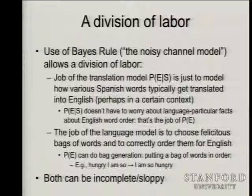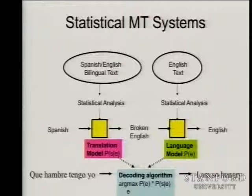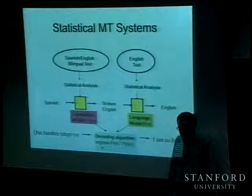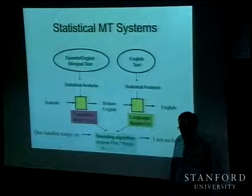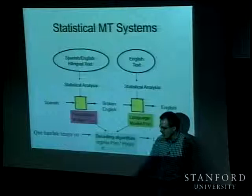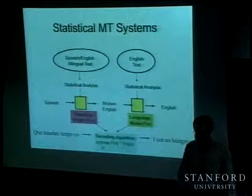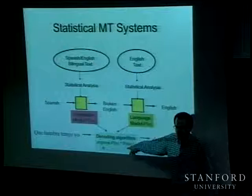So we have the translation model and the language model. The bit that we're going to provide to you that is left over is the tricky bit — normally called the decoder. When language and speech people say decoder, they mean search problem. All we've got is these two probability models and a Spanish sentence. What we want to do is say: according to these two probability models, what is the English sentence that maximizes this score? It turns out there's no good way to find it — this is an exponential search problem. People use various heuristic methods to do a half-decent job at working out the best translation according to the model.